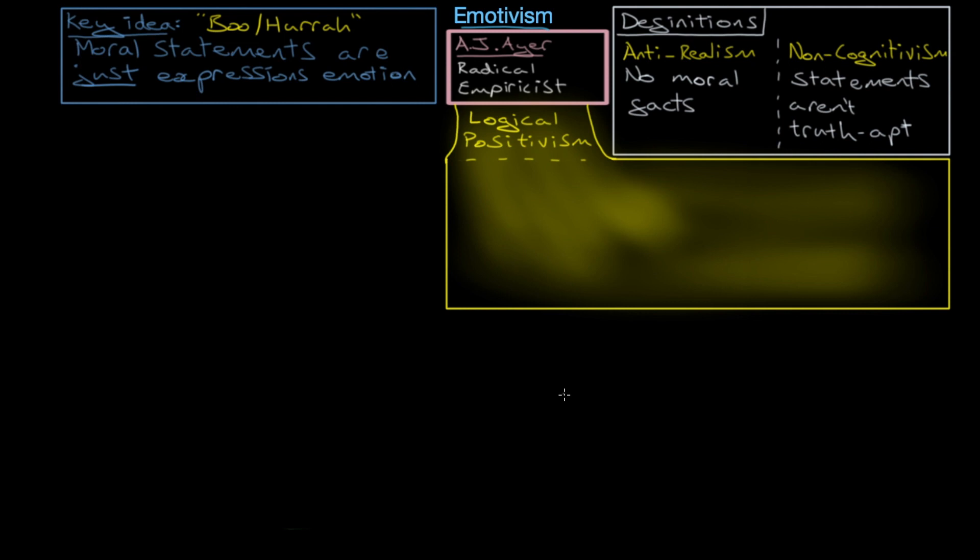he encouraged this logical positivism. This attempt by the Vienna Circle and Ayer and other philosophers was an attempt to make philosophy more scientific. Its aim was to only allow statements that were, in some way, empirically verifiable. That is, could be tested.